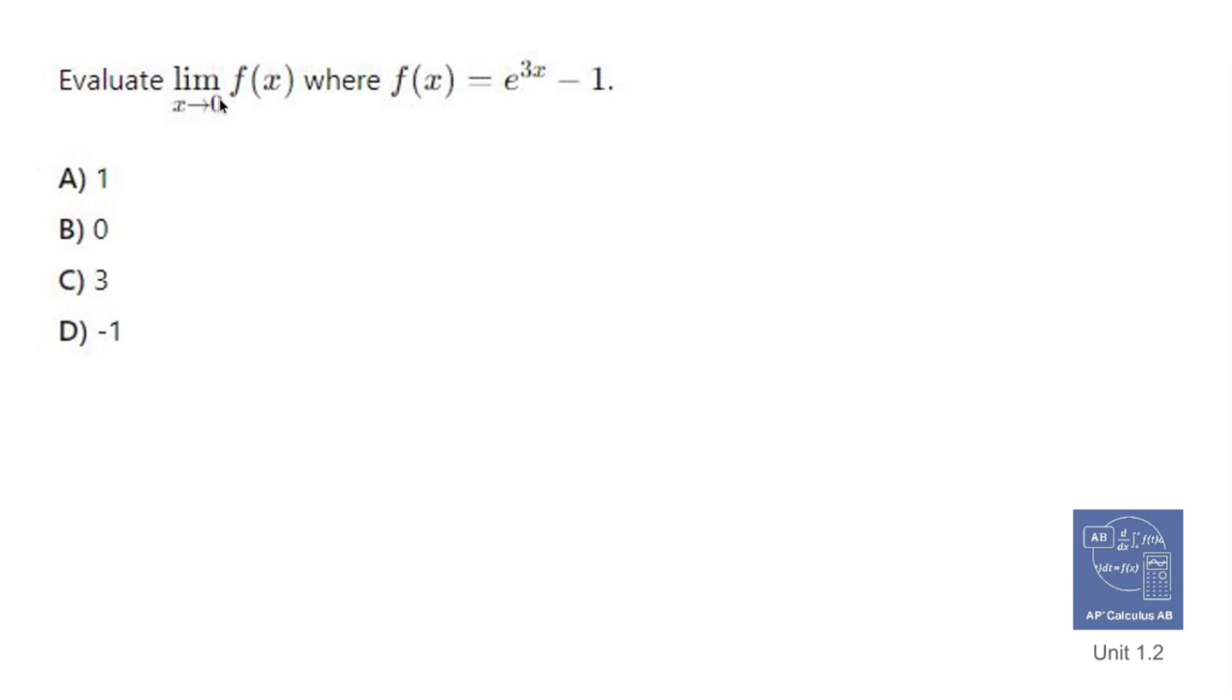If I plug in 0 for x, I get e to the 3 times 0 minus 1. That becomes e to the regular 0 minus 1. Anything to the 0th power is 1, and 1 minus 1 is 0.